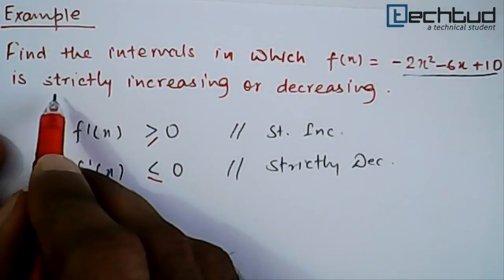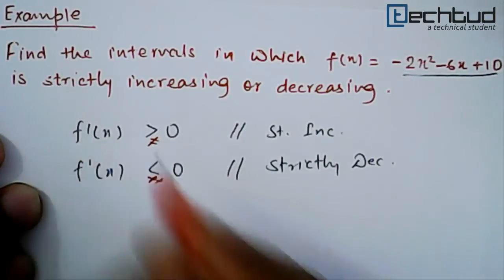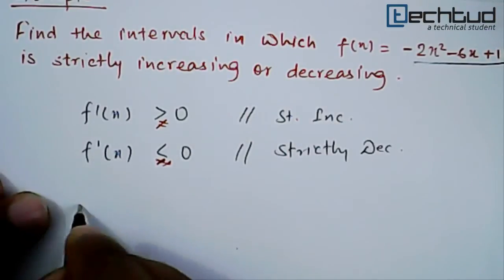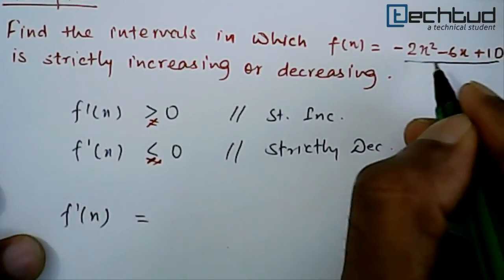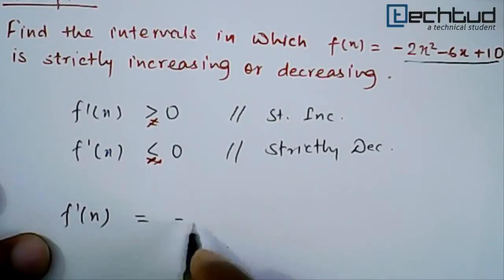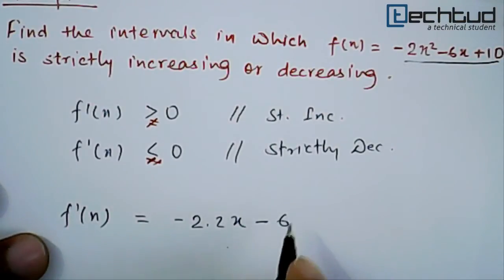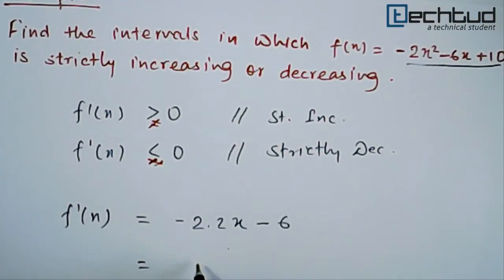As we have in the question, it is asking for the function to be strictly increasing or decreasing, so the equal to sign will not be there. We will have to find out the derivative of this function. So f dash of x equals — we will differentiate this function — so it will be minus 2 into 2x minus 6, which gives us minus 4x minus 6.